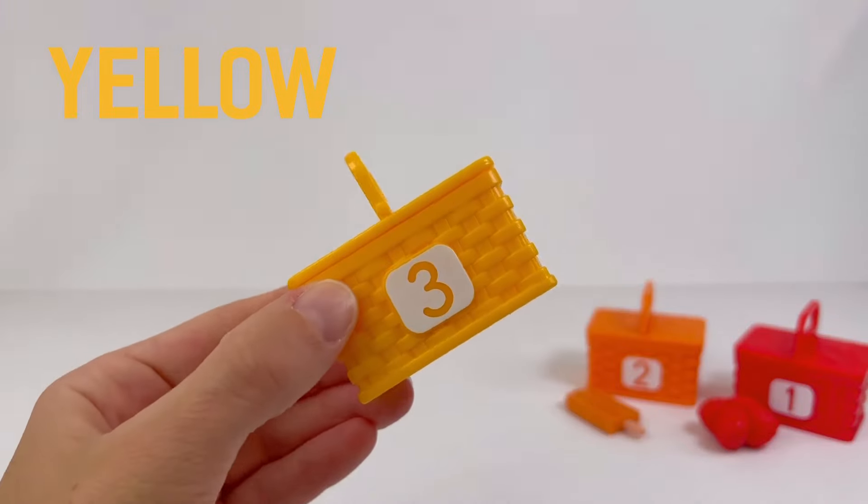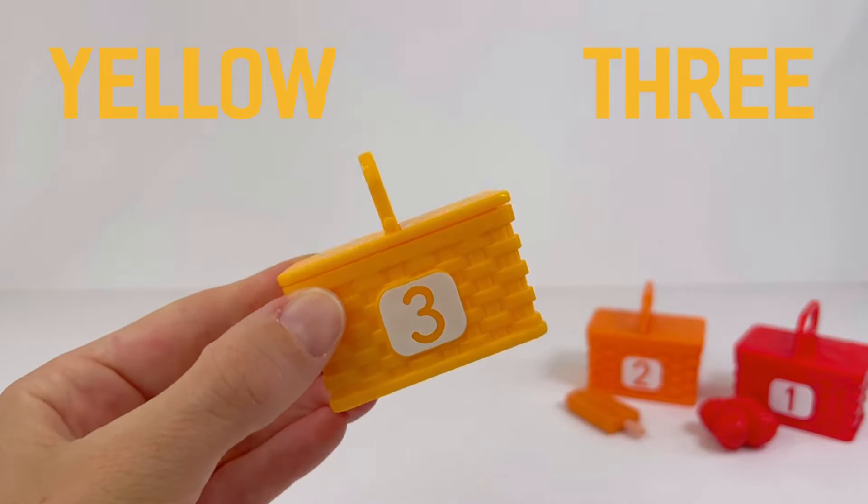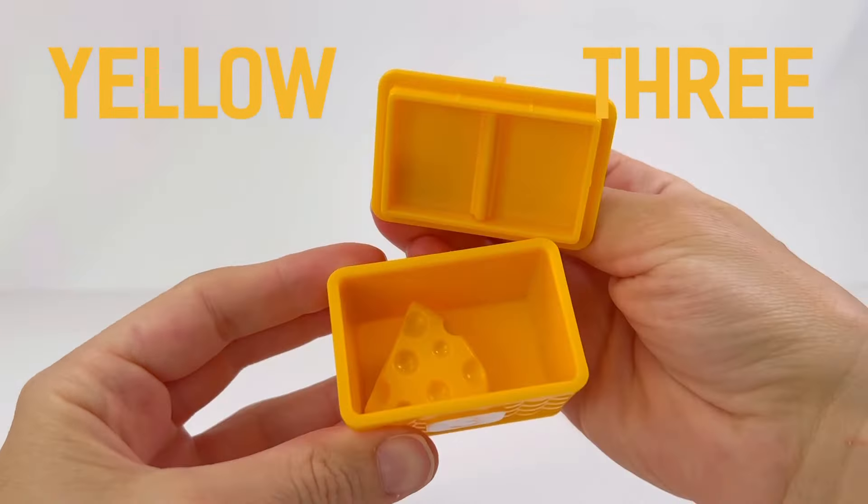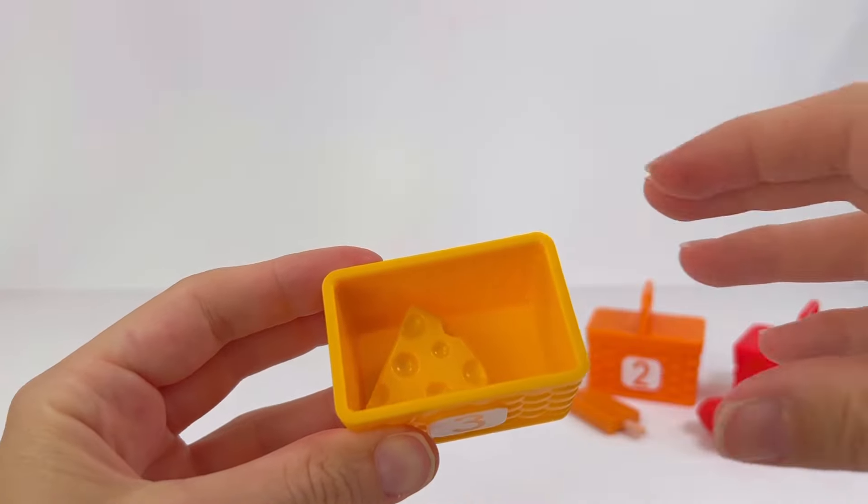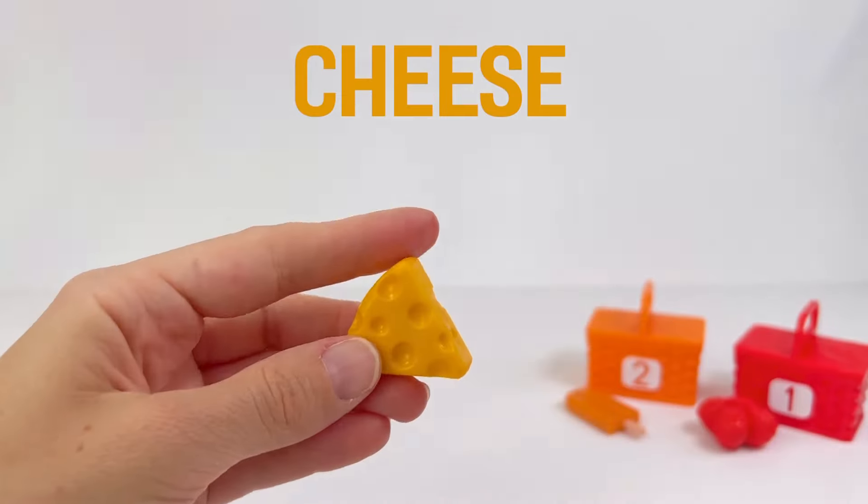Next is a yellow picnic basket with the number three on it. Inside it has a yellow cheese wedge.